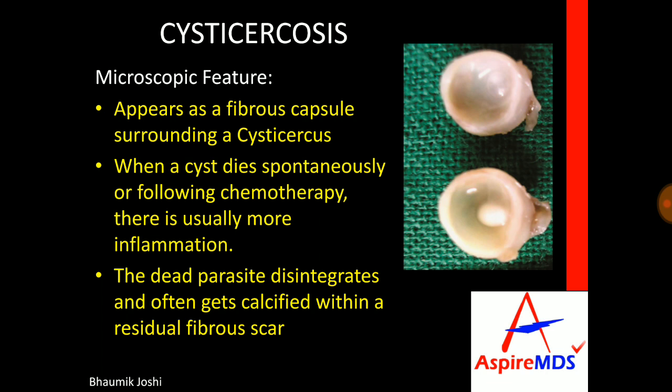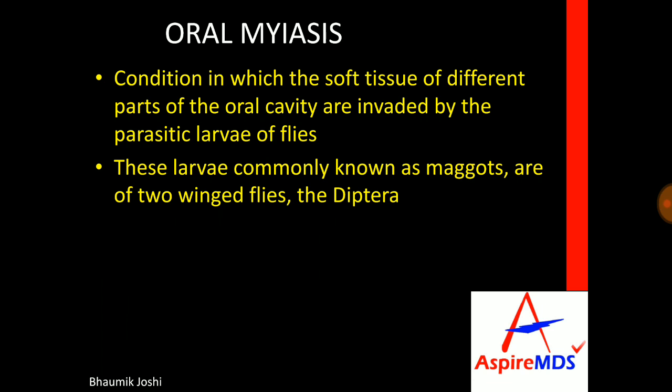Another parasitic infection is oral myiasis. Oral myiasis is the condition in which the soft tissue of different parts of the oral cavity are invaded by the parasitic larvae of flies. The flies are known as diptera and their larvae are known as maggots.